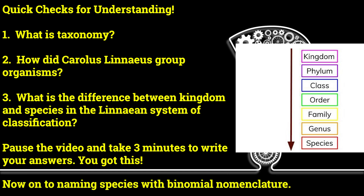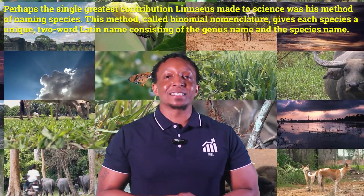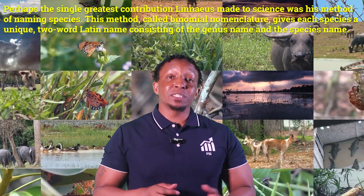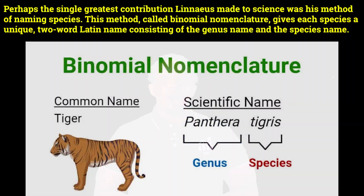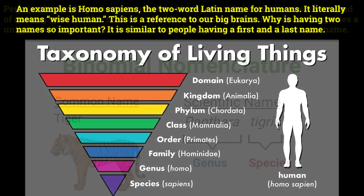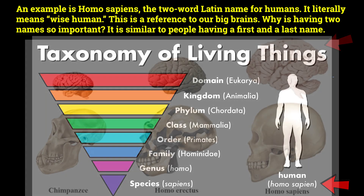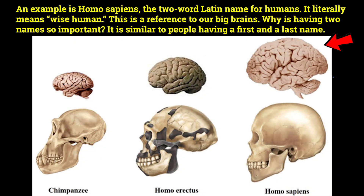Now on to naming species with binomial nomenclature. Perhaps the single greatest contribution Linnaeus made to science was his method of naming species. This method, called binomial nomenclature, gives each species a unique two-word Latin name consisting of the genus name and the species name. An example is Homo sapiens, the two-word Latin name for humans. It literally means 'wise human,' which is a reference to our big brains.